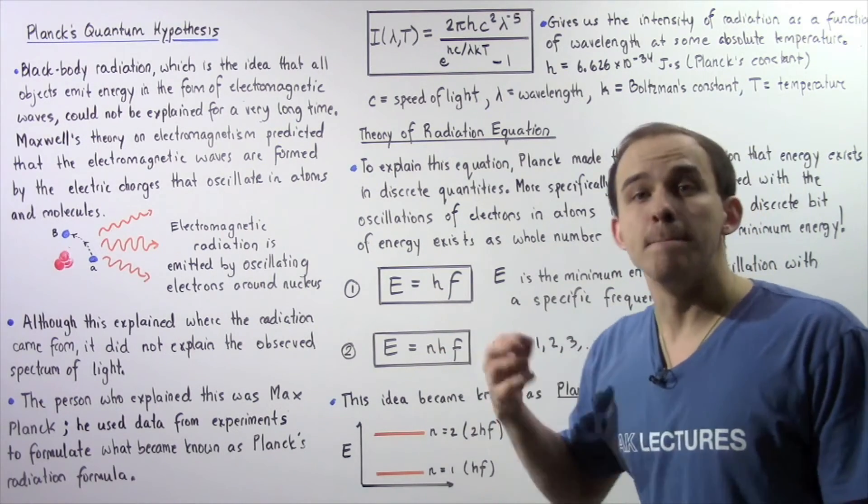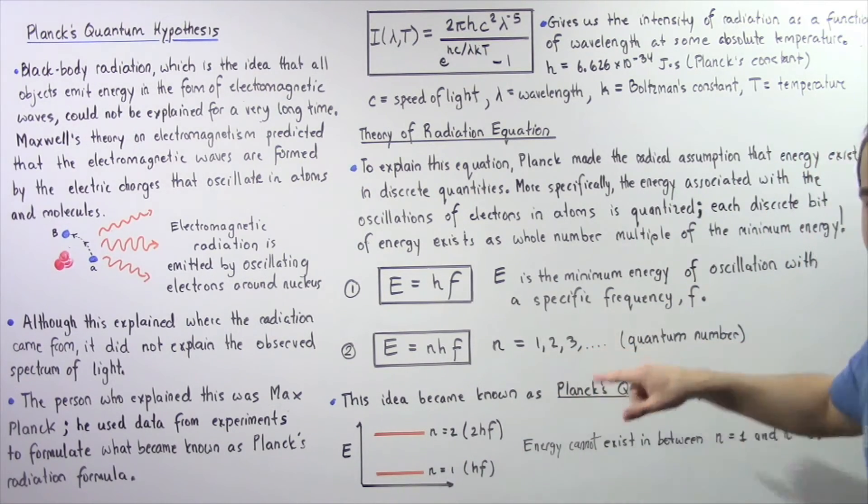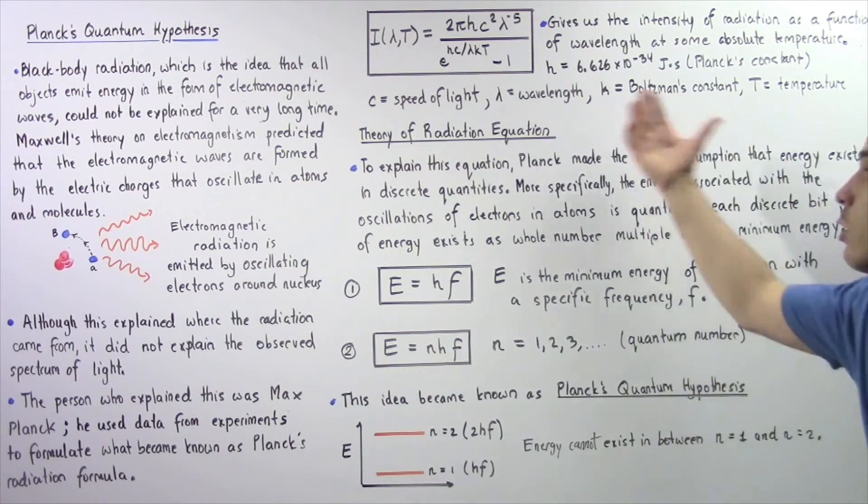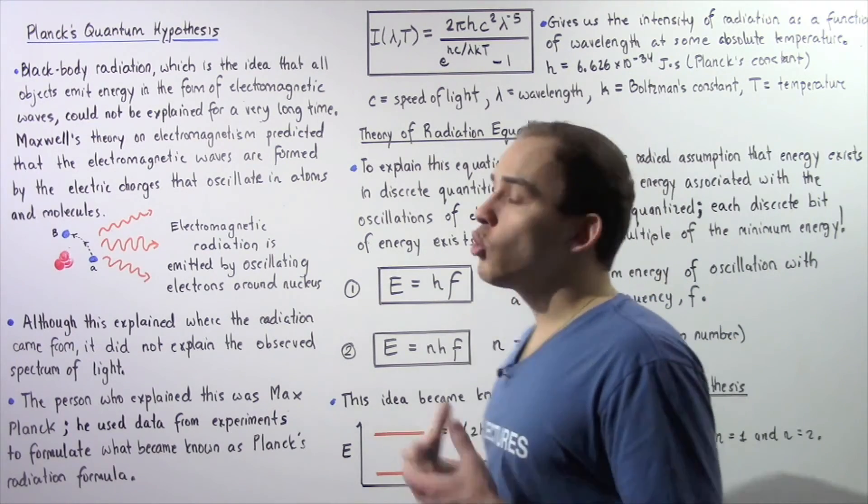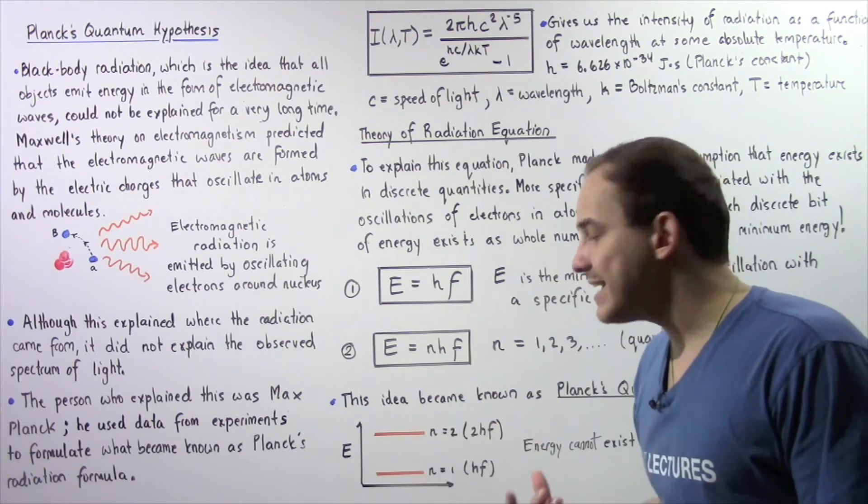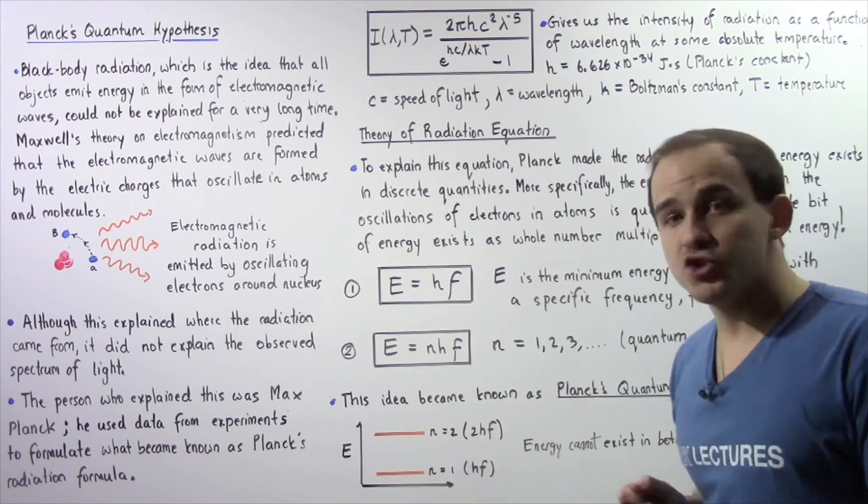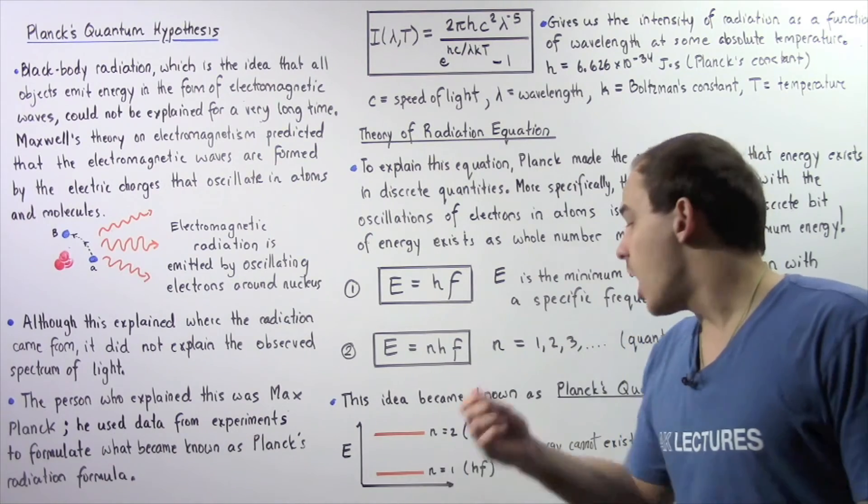So N is equal to a positive integer. It could be one, two, three, four, and so on. And N is known as the quantum number. Now this idea became known as Planck's quantum hypothesis, and it essentially led to quantum mechanics. So to better understand this, let's take a look at the following graph. Let's suppose the y-axis is the energy. Now this line represents N equals one, so the quantum number is one, and this line represents a quantum number of two.